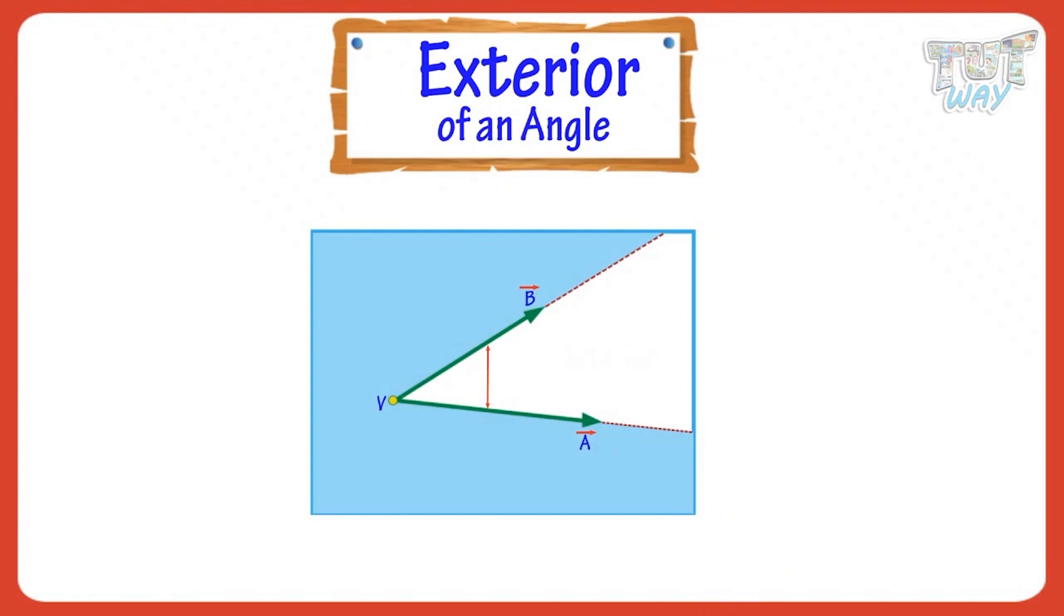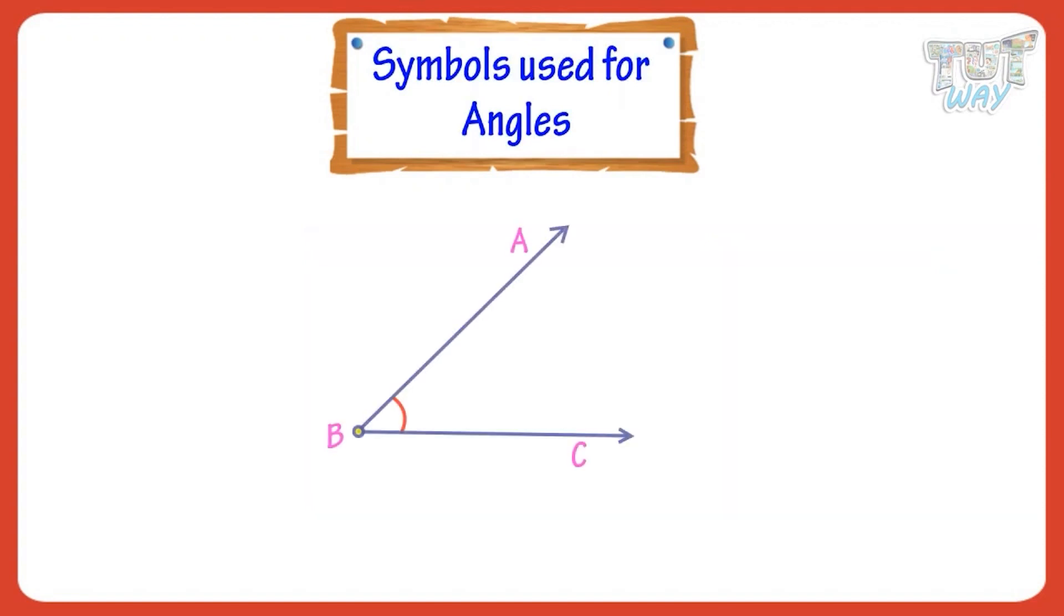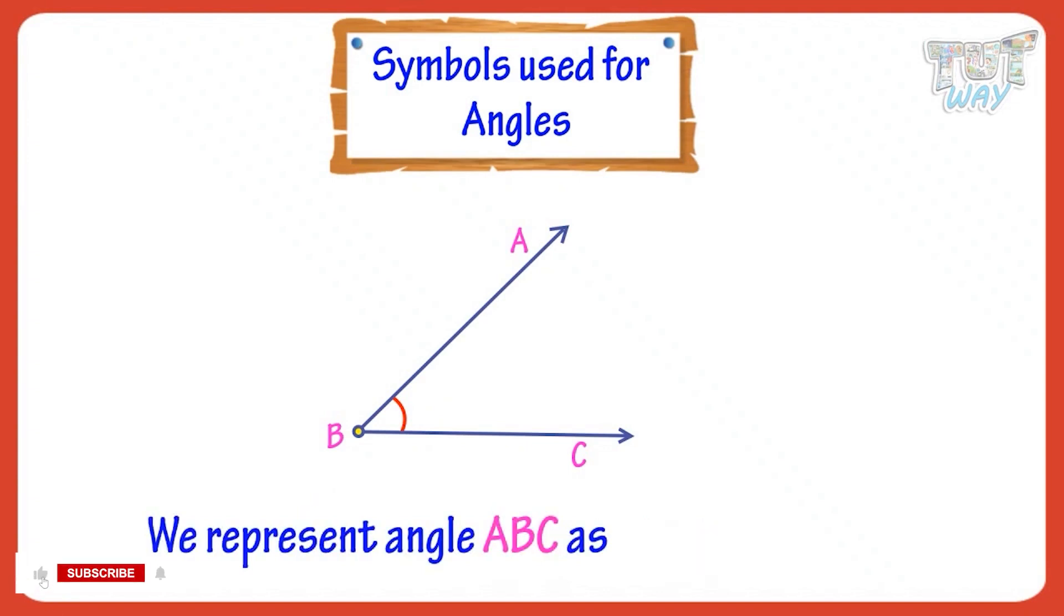Now let's see the symbols used for representing the angles. This is a symbol to represent an angle. We represent angle ABC like this, where vertex is always placed in the center. Here vertex is B.